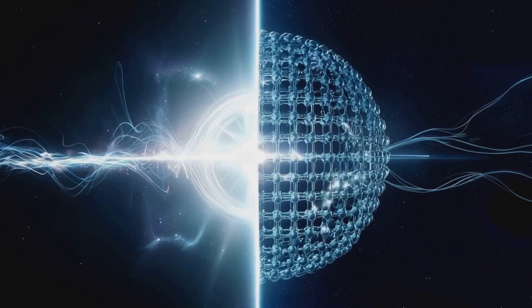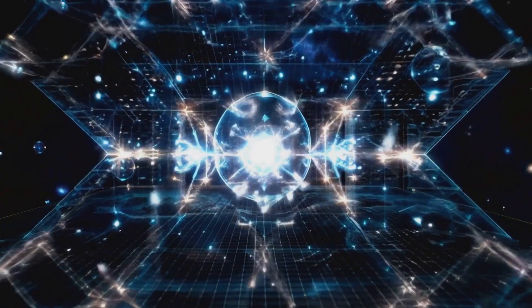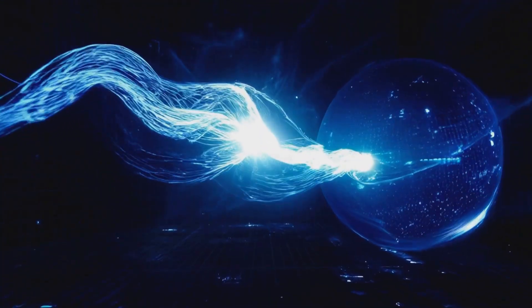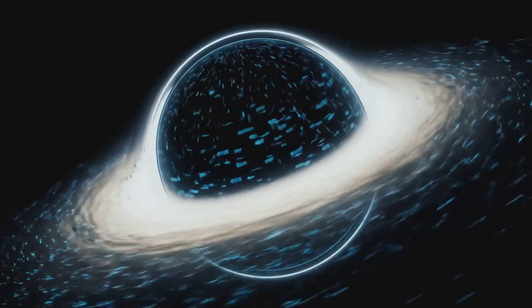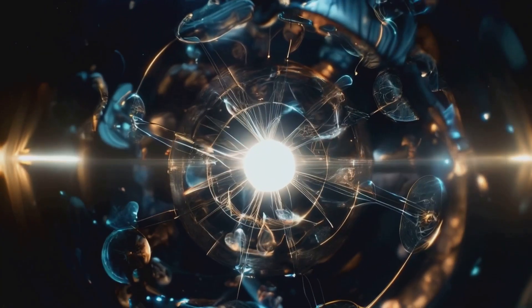Imagine the event horizon as a quantum mirror. Information falls into the black hole, passing through the event horizon. This information isn't lost, but encoded onto the surface of the event horizon, becoming part of the universe's holographic blueprint. This process is key to understanding how the universe maintains its holographic nature.